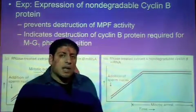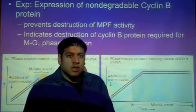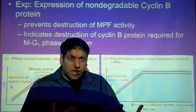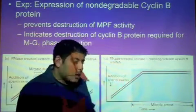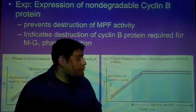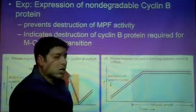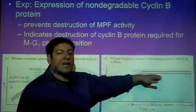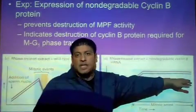If we create a cyclin B mutant that has the ability to not degrade, what's the effect on MPF activity? We do that experiment and this is what we see. A non-degradable form of cyclin B will maintain a high MPF activity.